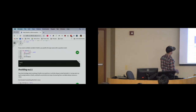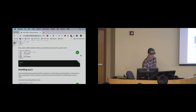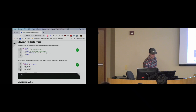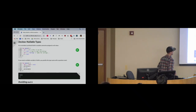Contrast this with Java: in Java, by default, every variable that can store an object reference can store null — that's the default and there is no other option. In Kotlin, every variable that can store an object reference will, by default, not store null. I have to twist Kotlin's arm a little bit to get it to store null.